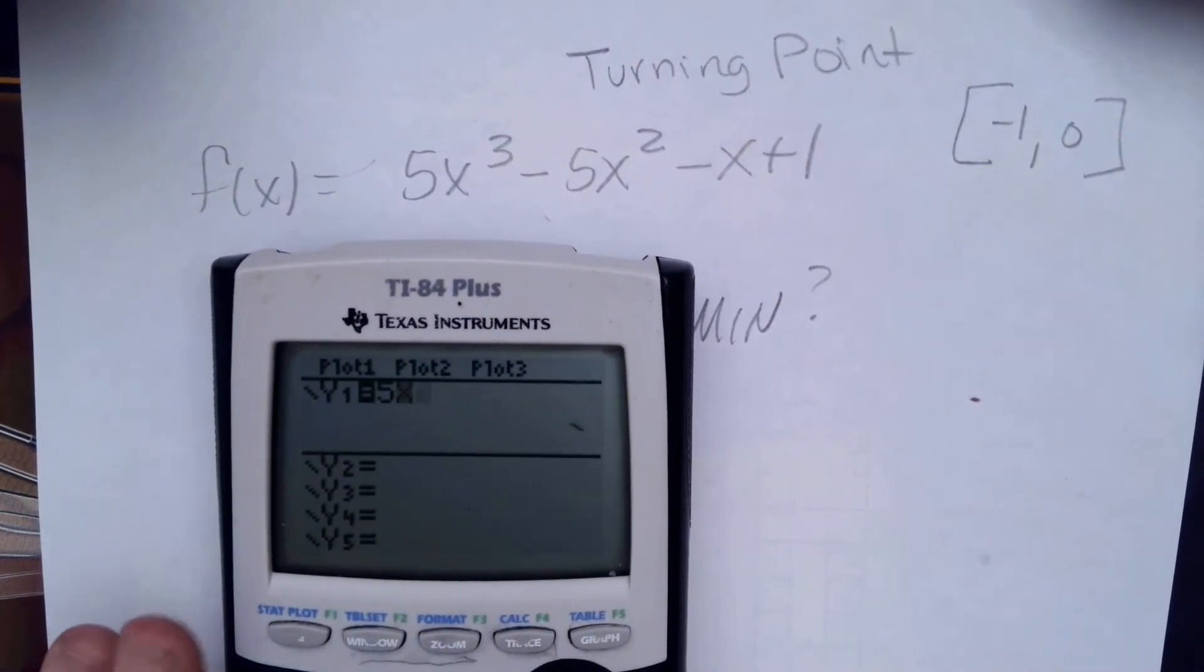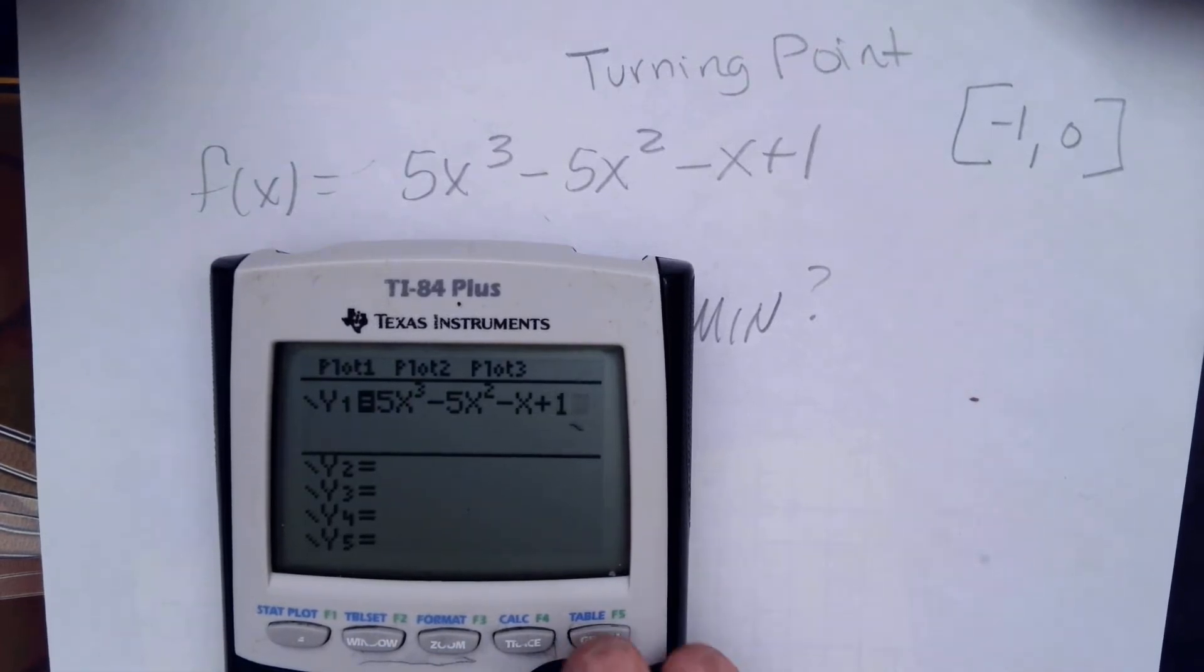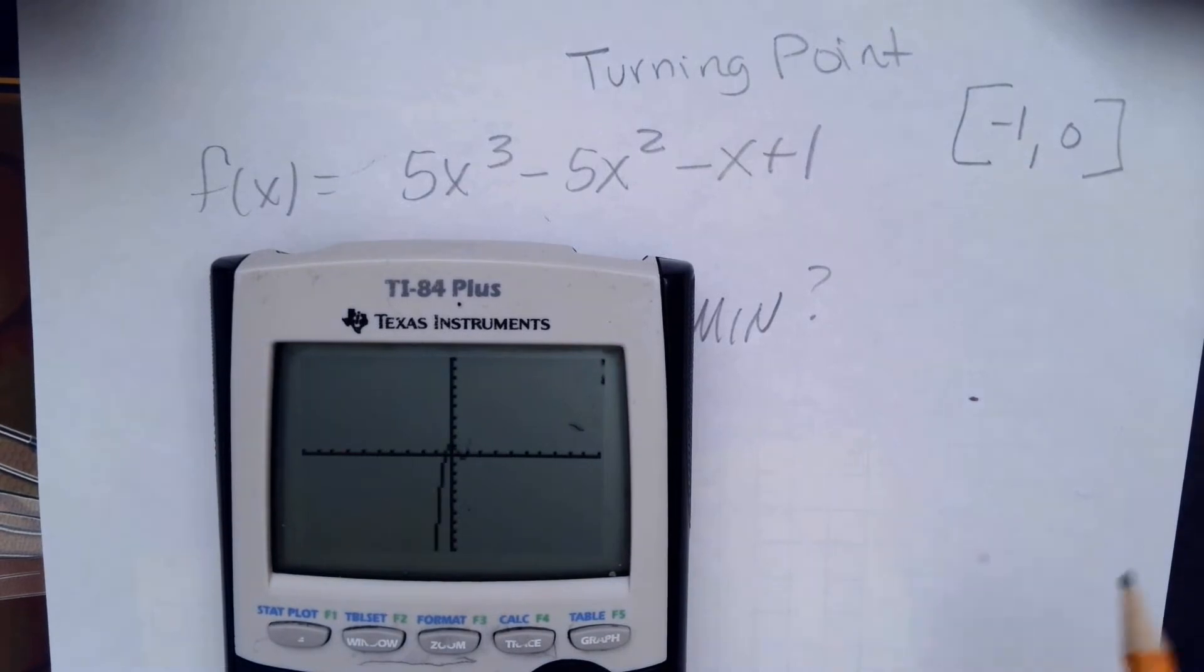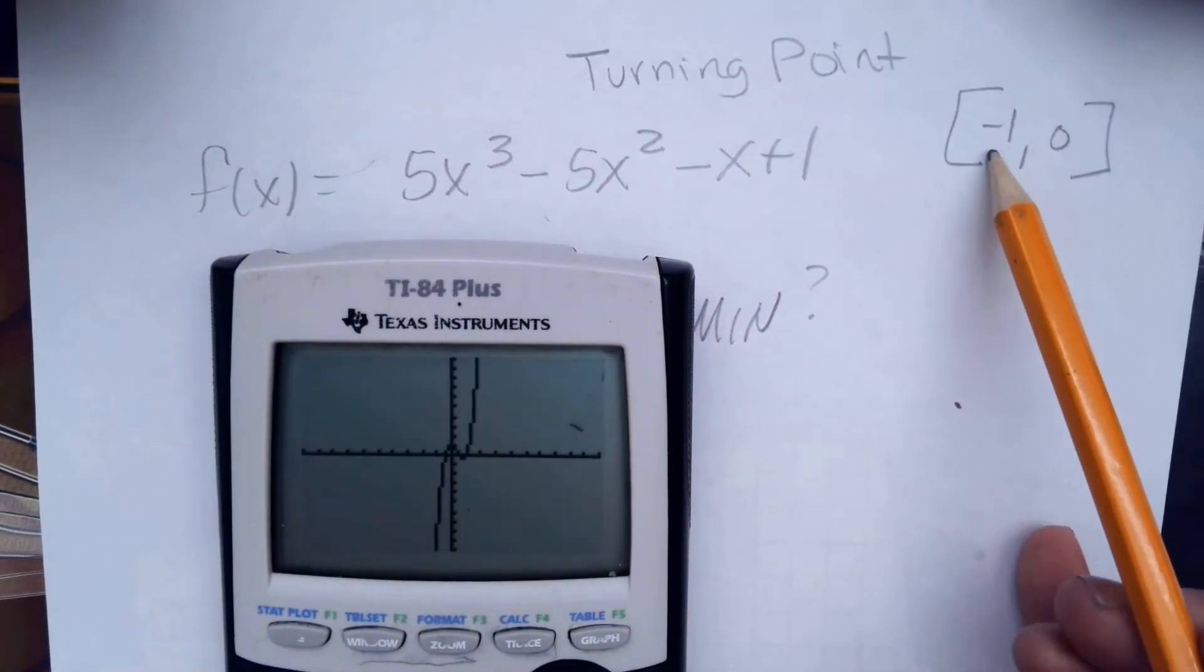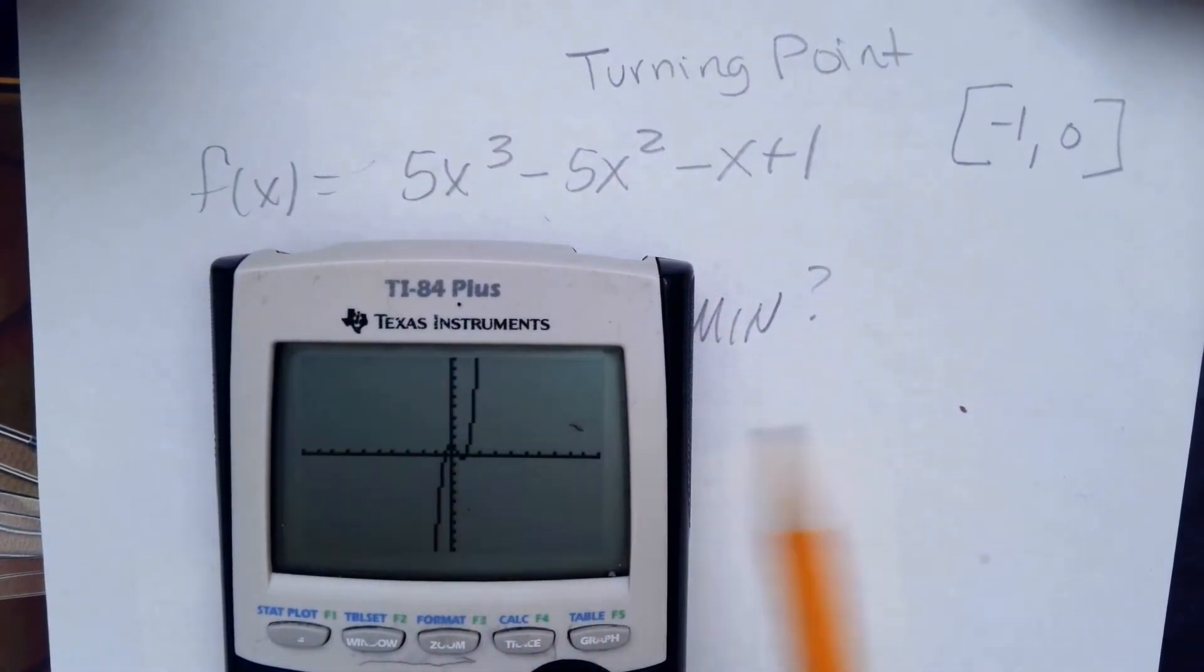It's 5x to the third minus 5x squared minus x plus 1. And I would graph it. And it's asking specifically about a turning point between negative 1 and 0.